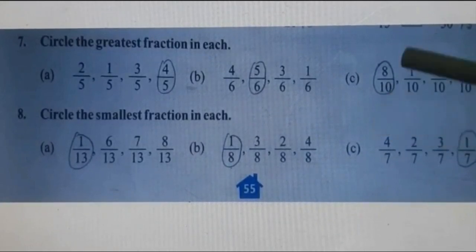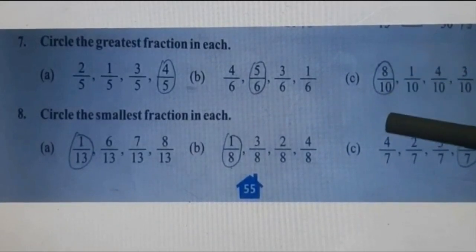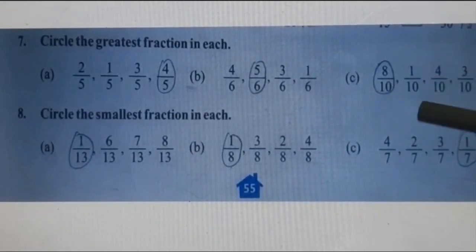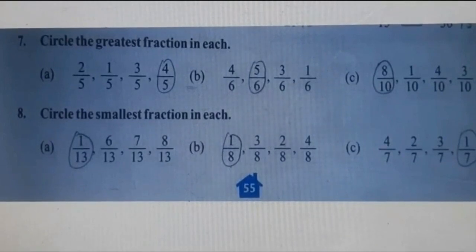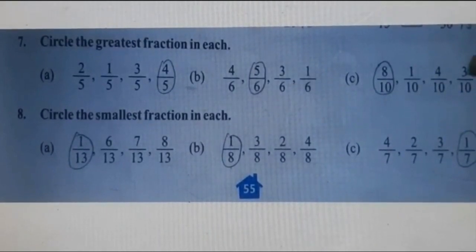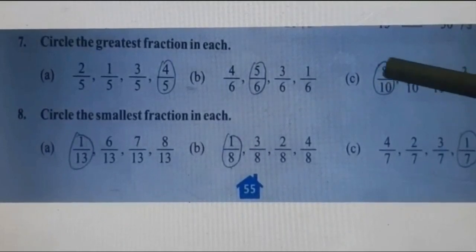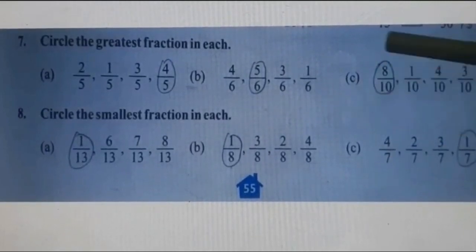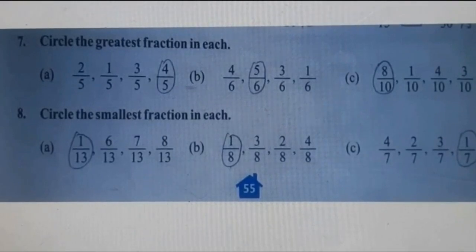Part C: 8 upon 10, 1 upon 10, 4 upon 10, 3 upon 10. Denominators are the same — like fractions — so we check the numerators. 8 is the greatest numerator, so 8 upon 10 is the greatest fraction.